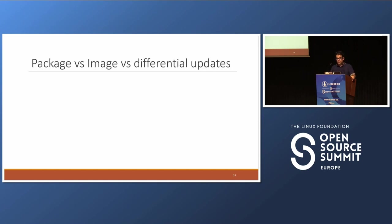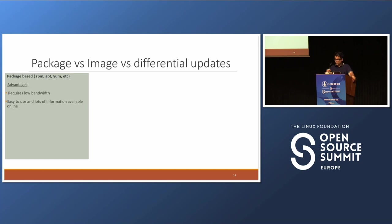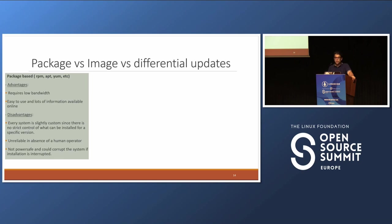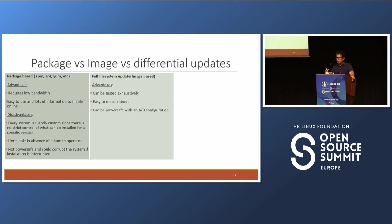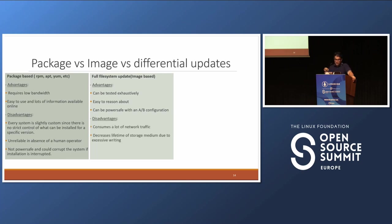Let's discuss package versus image versus differential upgrades. Package-based upgrades — RPM, apt, yum — require low bandwidth, are easy to use, and have lots of information available online. The disadvantages: every system is slightly custom since there's no strict control of what can be installed on specific versions, it's unreliable without a human operator, not power safe, and could corrupt the system at any time. Full system upgrades can be tested exhaustively because we're dealing with just one image — EXT4 or SquashFS — that gets downloaded onto a device. It's easy to reason about, and can be power safe with the A-B configuration. Disadvantages: it consumes a lot of network data, and decreases the lifetime of the storage medium due to excessive writing.